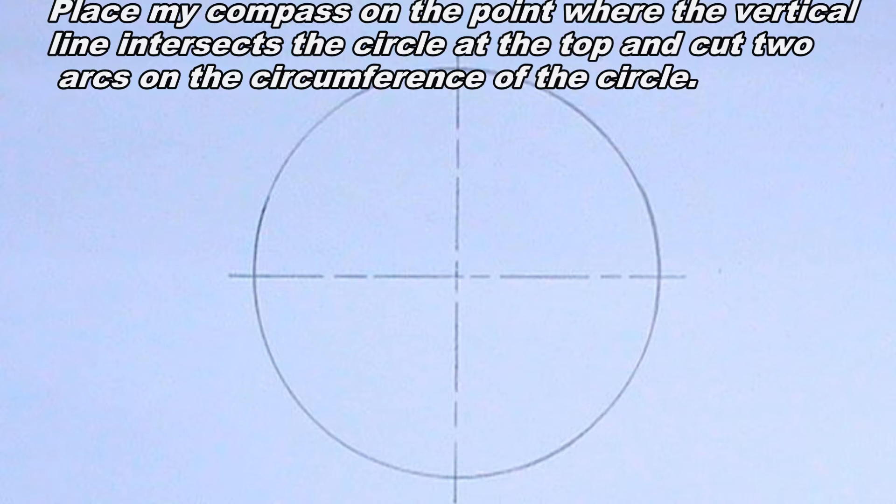The next thing I will do is to place my compass on the point where the vertical line intersects the circle at the top and cut two arcs on the circumference of the circle. I will also repeat the same procedure for the point where the vertical line intersects the circle at the bottom.